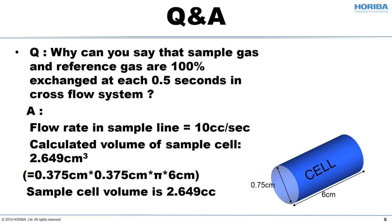Flow rate in the sample line is normally 10 cc per second. The volume of the sample cell is 2.649 cc. The flow rate through the analyzer is sufficient to exchange the gas in the cell without contamination. The mean time between failures for the solenoid is more than 100 million sequences, and the recommended replacement frequency of the solenoid is about 3 to 4 years.